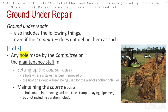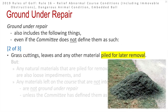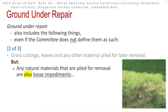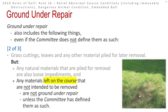Golfers also get relief from any maintenance being done on the course — for example, if they're digging up an irrigation line, even if that's not marked by the committee. They also get relief from grass cuttings and leaves if they are piled for removal. That part is very important: if the material is not intended to be removed from where it's left, it would not fall under this category. For instance, if grass clippings are spread in an area to fill dirt patches, that would not be ground under repair because it's not piled for removal.